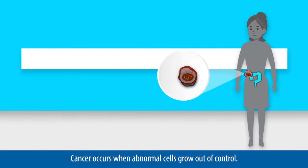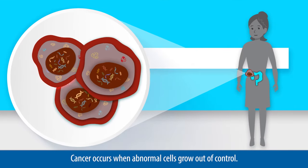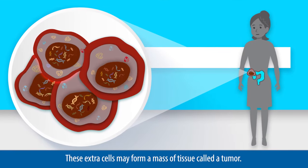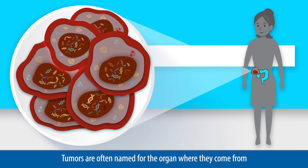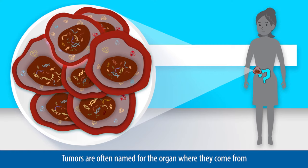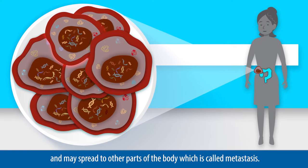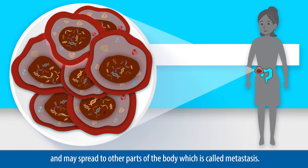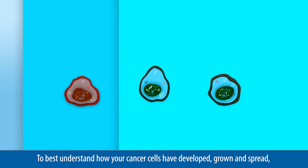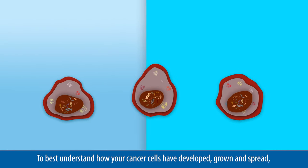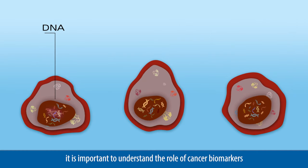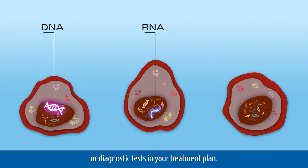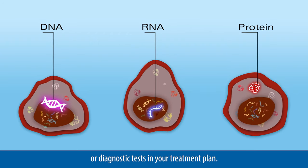Cancer can start any place in the body. Cancer occurs when abnormal cells grow out of control. These extra cells may form a mass of tissue called a tumor. Tumors are often named for the organ where they come from and may spread to other parts of the body, which is called metastasis. To best understand how your cancer cells have developed, grown, and spread, it is important to understand the role of cancer biomarkers, or diagnostic tests, in your treatment plan.